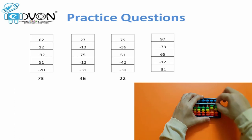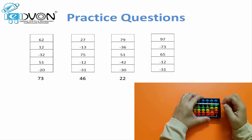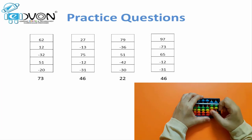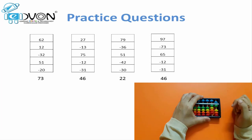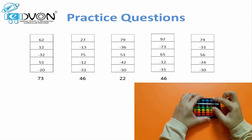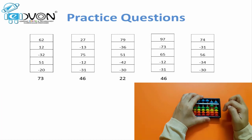Last two questions on abacus: 97, minus 73, plus 65, minus 12, minus 31 — answer 46. Last question: 74, minus 31, plus 56, minus 34, minus 30 — answer 35.